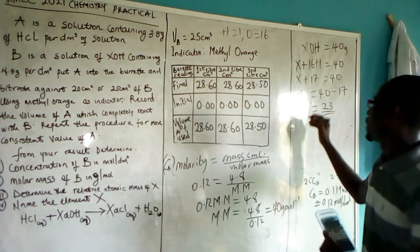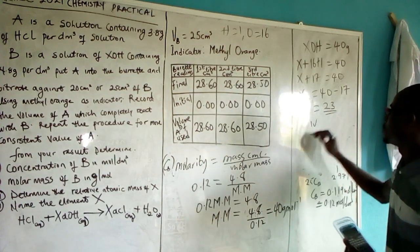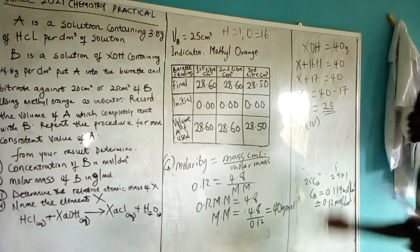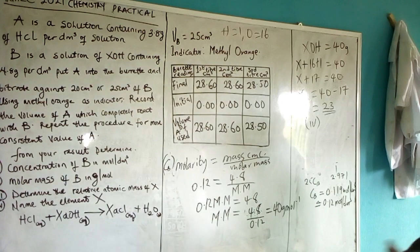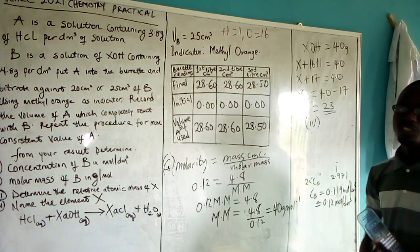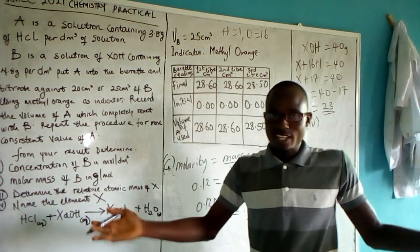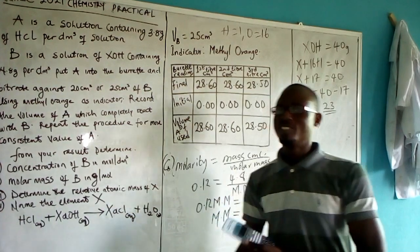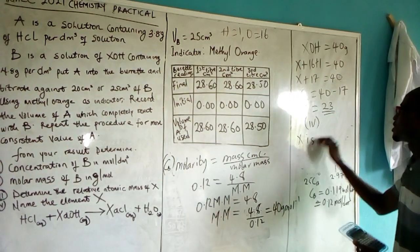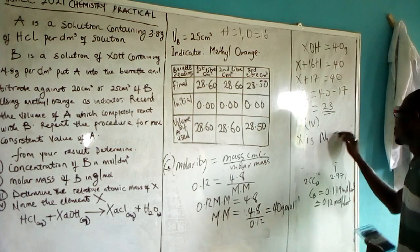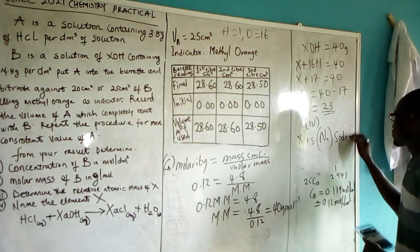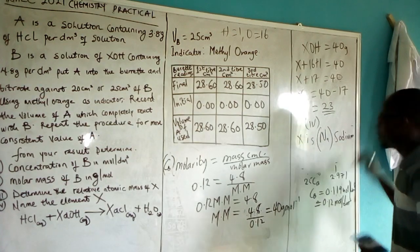We are asked to name the element. The element with relative atomic mass 23 is sodium, symbol Na. So X is sodium, and the base is NaOH.